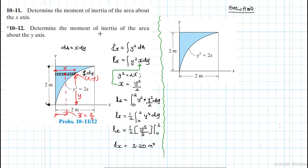Now let's find the moment of inertia about the y-axis. To do that, we draw a differential strip that is parallel to the y-axis — in this direction. The thickness of this strip is dx, and it cuts the curve at x, y. This length here is x, and this height is also equal to y.